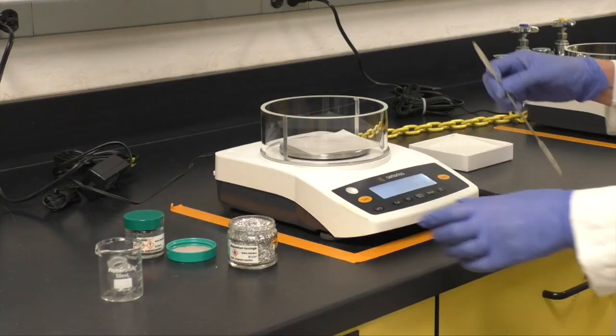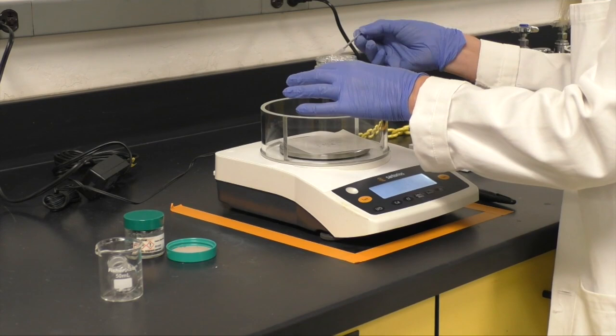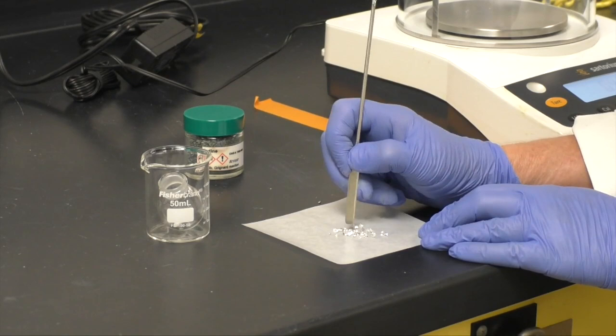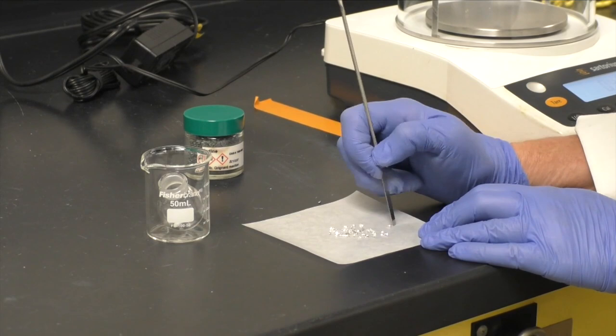Weigh out 0.13 to 0.15 grams of magnesium turnings. Use a spatula to scratch the turnings to expose a shiny surface, then add them to your 10 milliliter round bottom flask.